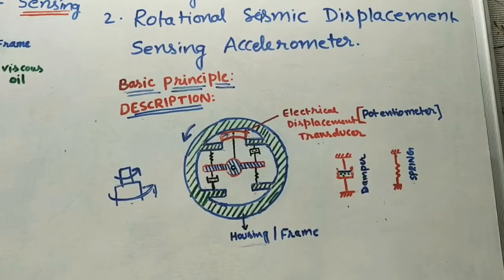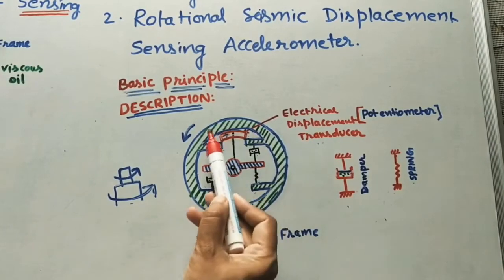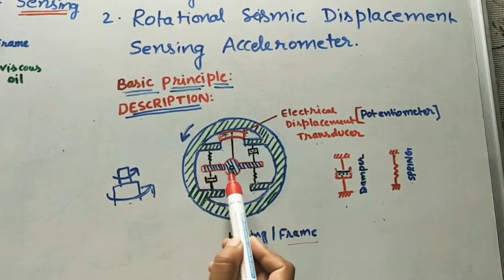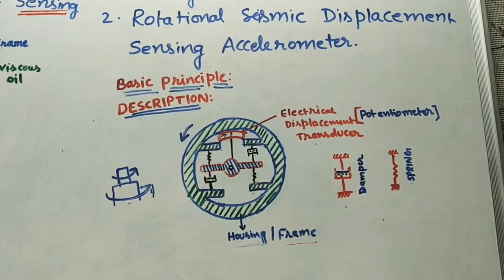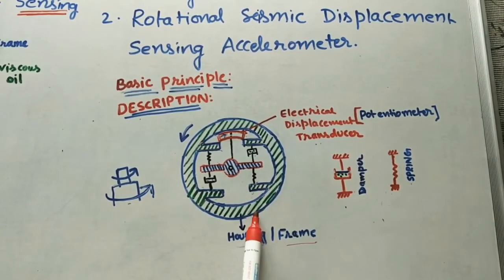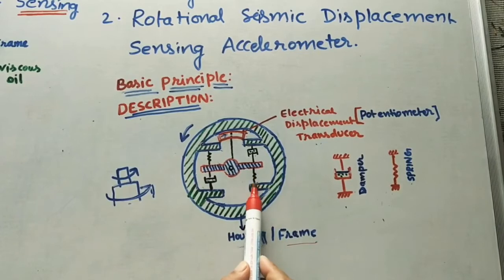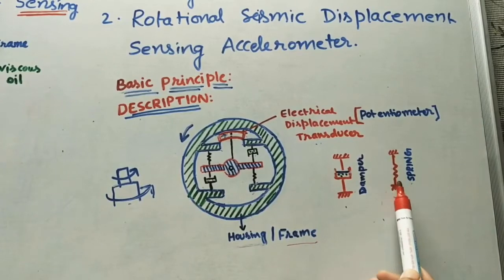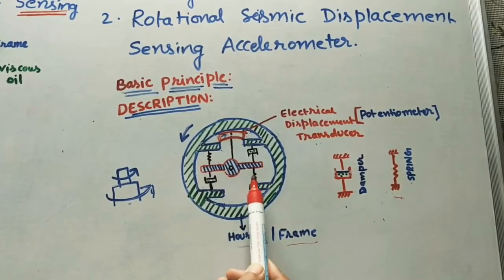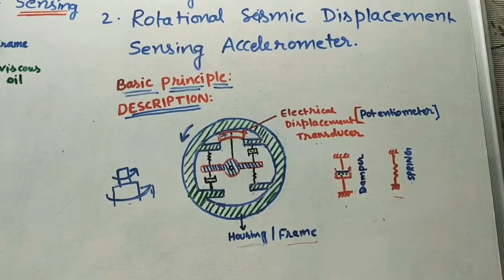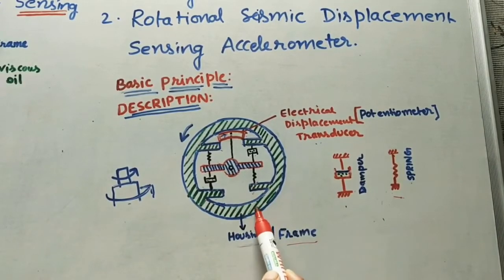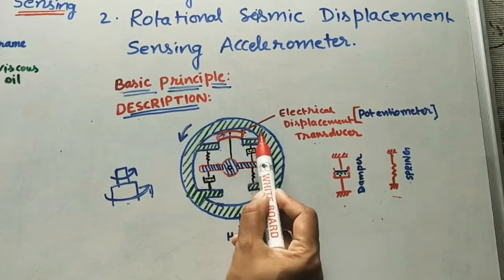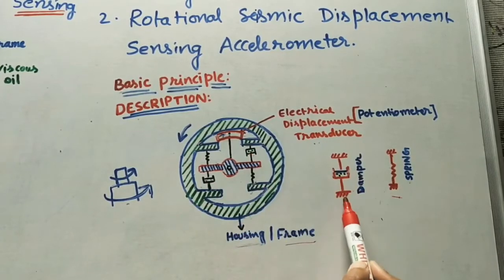There are three main parts of this accelerometer. The first part is the housing or frame, and the center one is the mass. This mass is connected to the frame through springs — here we see two zigzag springs, one on each side. So the first part is: mass is connected to the frame through springs.